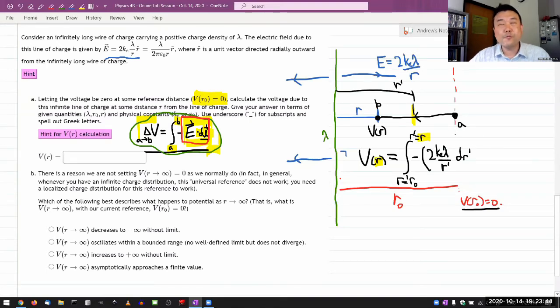And so the path element would be dR prime. And what I'm wondering right now is if I need a minus sign or not. Because in terms of vectors, E dot DL, you know, electric field points radially outward. It looks like my DL is pointing inward. So it feels as though that product will need a minus sign.